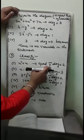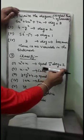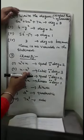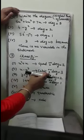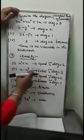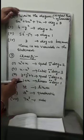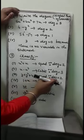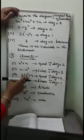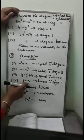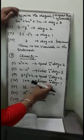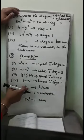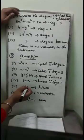In the third part, y plus y squared plus 4 — the highest power of the variable is 2, so it is quadratic. In the fourth part, 1 plus x has degree 1, so it is linear. In the fifth part, 3t — the highest power of t is 1, so it is linear.